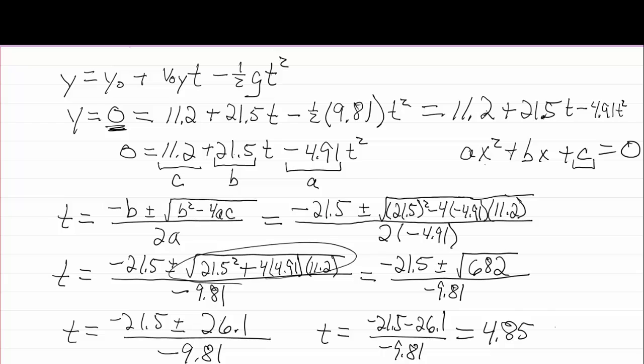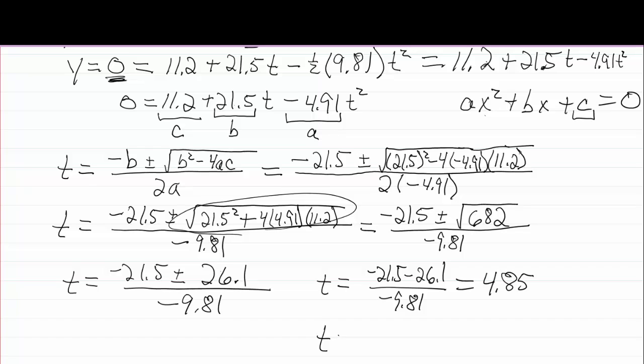But I get 4.85 for that first one. Comes out positive. When I do the plus sign that's on there, I get minus 0.47 for that. So I get two possible answers on this thing.